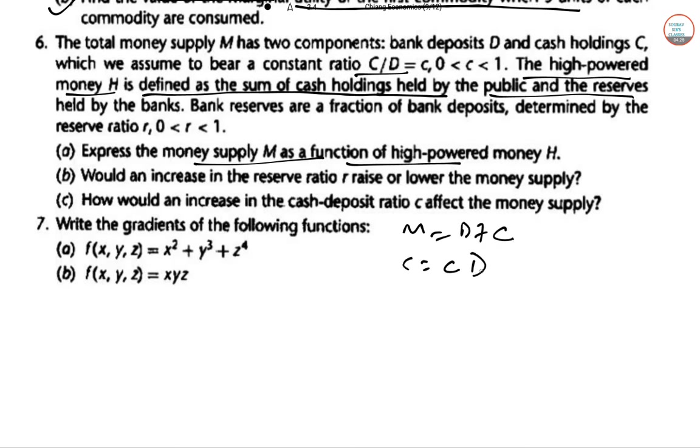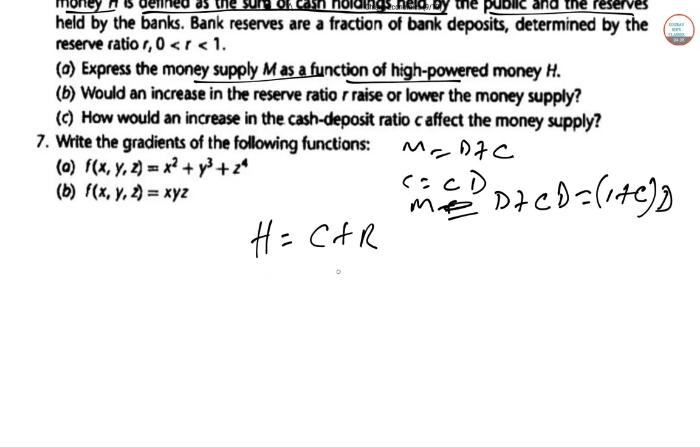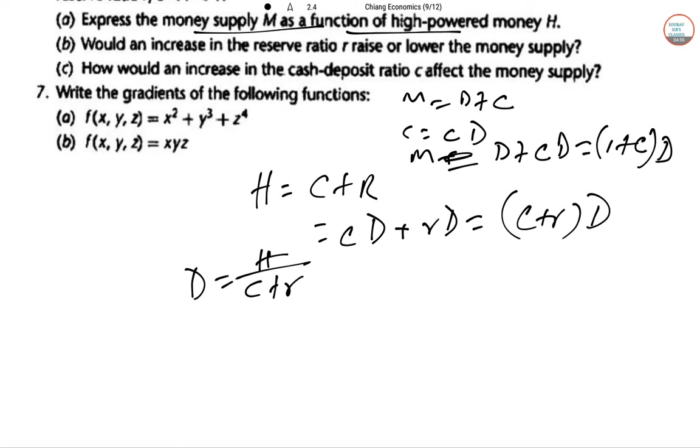Where C equal to small c into D, so M equal to D plus C into D, so (1 plus C) into D. Since H, high-powered money, equal to C plus R, so this is C of D, R of D, so (C plus R) into D. So we can write D equal to H by (C plus R). So by substituting, we can have M equal to (1 plus C)/(C plus R) all into H.